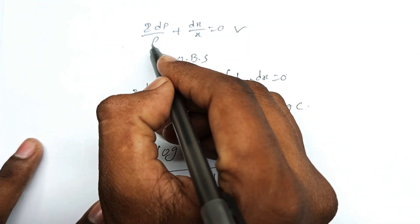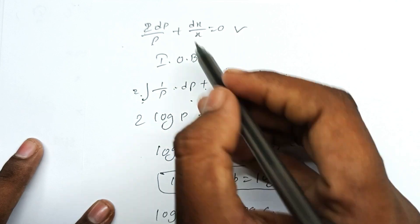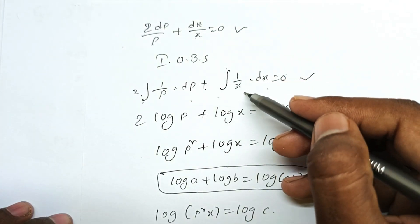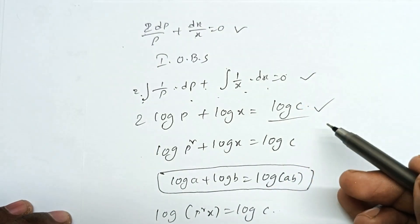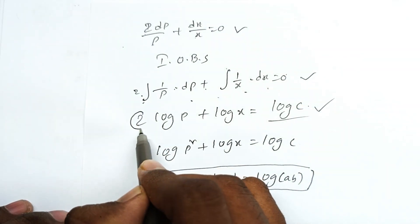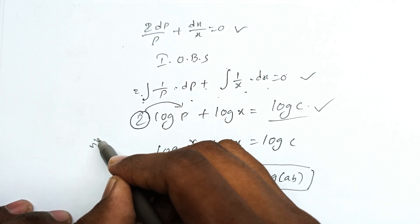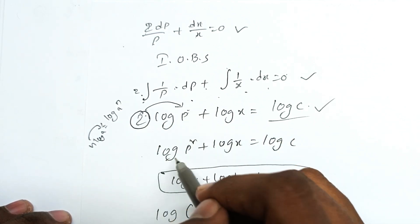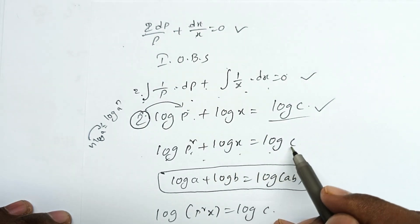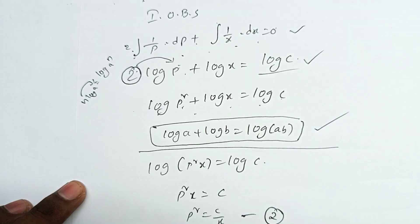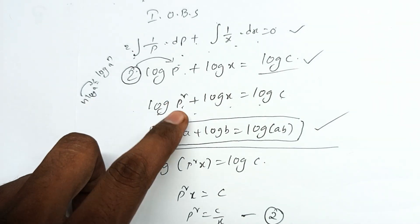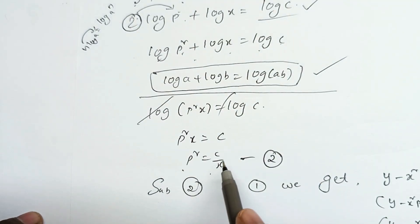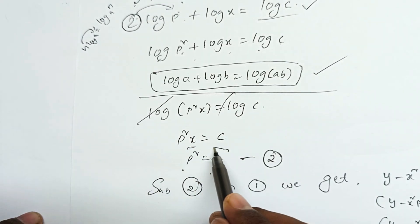Now integration on both sides. Two integrals: 1 by p dp plus integral 1 by x dx is equal to 0. Integral of 1 by p is log p. Integral of 1 by x is log x — plus log c. Using the property n log a equals log a power n: 2 log p becomes log p squared. So, log p squared plus log x is equal to log c. Using the formula log a plus log b equals log ab: log p squared x equals log c. Therefore p squared x equals c, so p squared equals c by x.